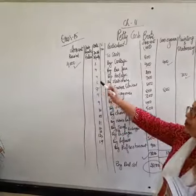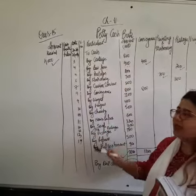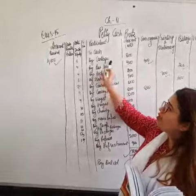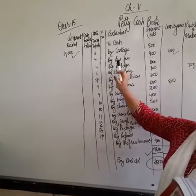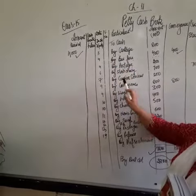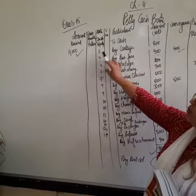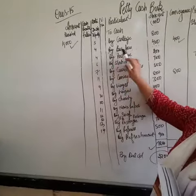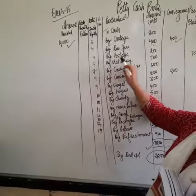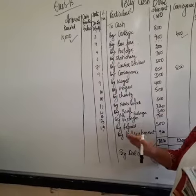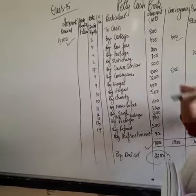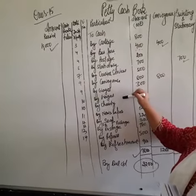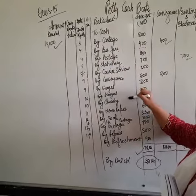Our next step is to record all the expenses. Date-wise you have to write down the expenses — like on 3rd April there is cartage, then on 4th bus fare, then postage and so on. The next step is to write down the amounts of those specific expenses.